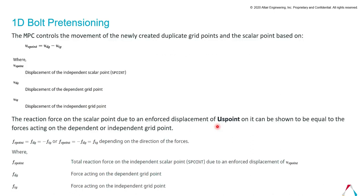This is based on the following equations: US_point = UDG minus UIG, where US_point is the displacement of the scalar point, UDG is the displacement of the dependent grid point, and UIG is the displacement of the independent grid point. The reaction force on the scalar point due to an enforced displacement of US_point equals the force acting on the independent grid point, shown as: F_Spoint = F_DG minus (negative of F_IG), depending on the direction of forces. Here F_Spoint is the total reaction force on the scalar point, F_DG is the force on the dependent grid point, and F_IG is the force on the independent grid point.